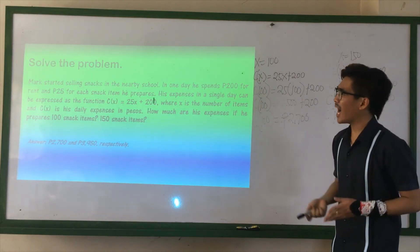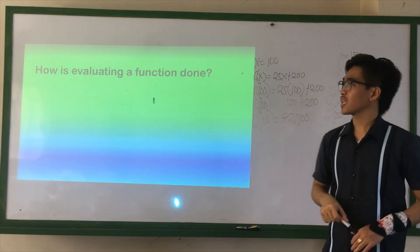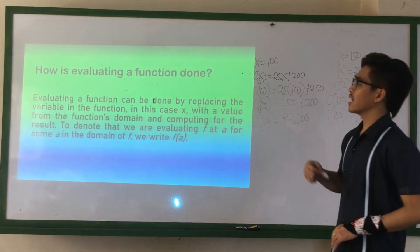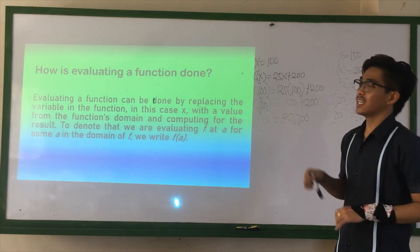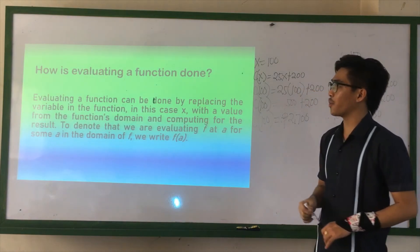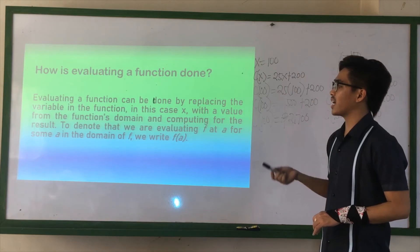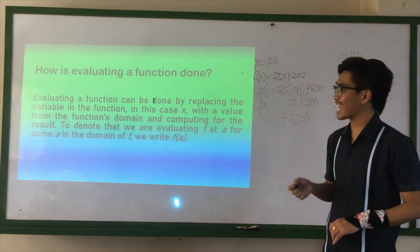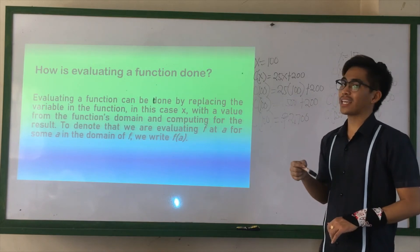Now, how is evaluating a function done? Remember, evaluating a function can be done by replacing the variable in the function, in this case X, with a value from the function's domain and computing for the result. To denote that we are evaluating F of A for some A in the domain of F, we write F of A.